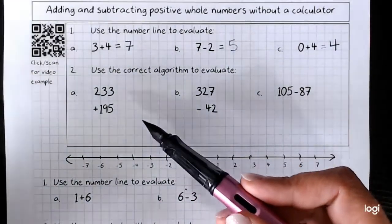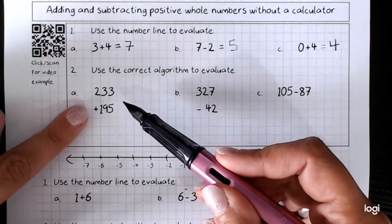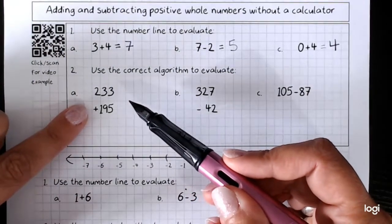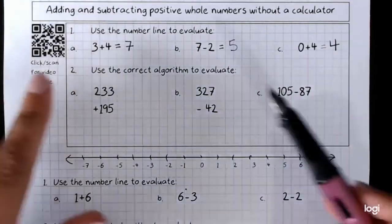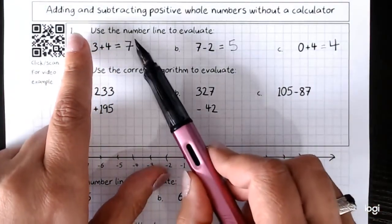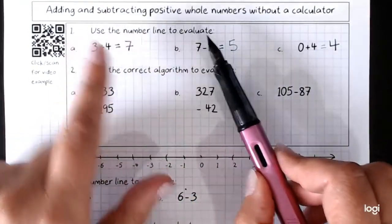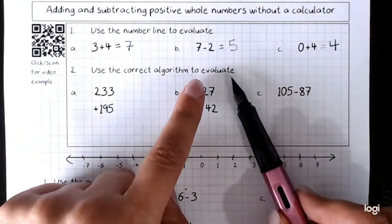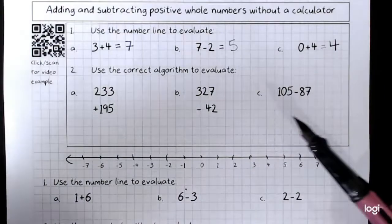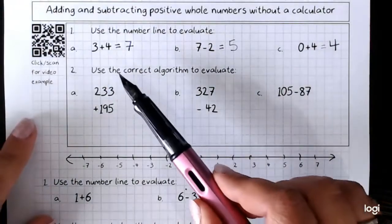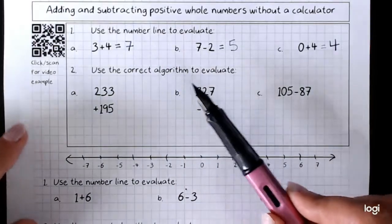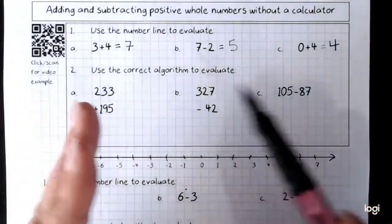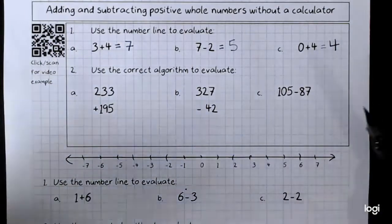The way that we work through larger numbers, when it's way too big for the number line, is using the algorithm. These questions have asked us to use the number line to evaluate. Remembering, of course, that evaluate means find the value, the number answer. And here use the correct algorithm to evaluate. An algorithm is a way of setting out a question and then following steps till we get the answer.